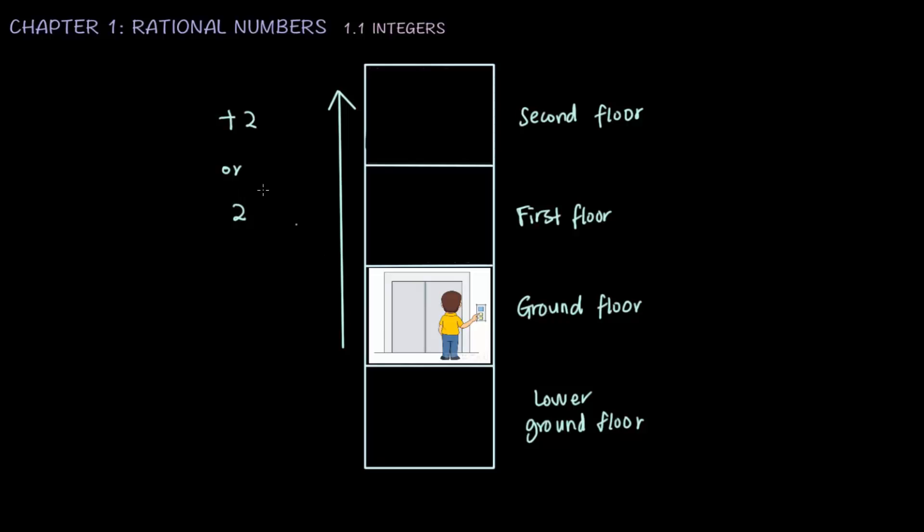However, if the elevator is going down, we will write it as negative one. This is how we present positive and negative numbers. Positive numbers will be written when we move up, while negative numbers will be written if we move down.